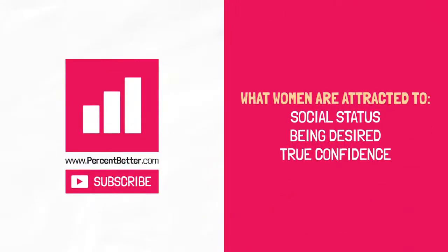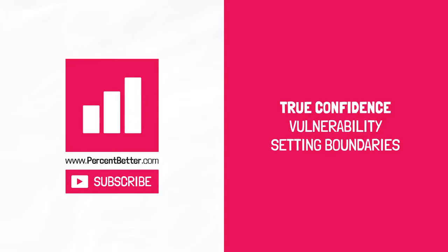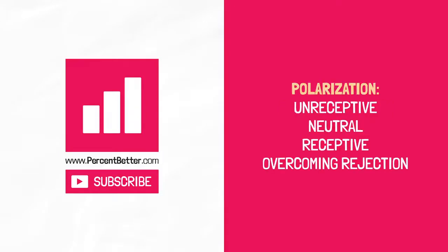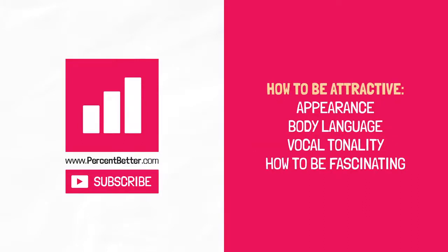In part one reality, we learned about what women are attracted to: social status, being desired, true confidence, with true confidence being made up of vulnerability and setting boundaries. In part two strategy, we learned about polarization, the three categories of women which are unreceptive, neutral, and receptive, and we also learned about overcoming rejection. In part three honest living, we dove into demographics, which is made up of beliefs and self-selection, age, money, and looks, race and the foreigner effect, and attracting the top 1%. We also learned how to be attractive: appearance, which is made up of grooming and how you dress, body language, vocal tonality, and how to be a fascinating person. My name is Brandon, and I hope this video made you 1% better.